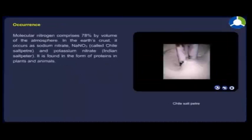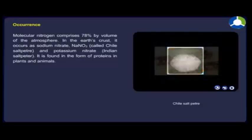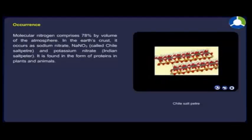Molecular nitrogen comprises 78% by volume of the atmosphere. In the earth's crust, it occurs as sodium nitrate NaNO₃ and potassium nitrate. It is found in the form of proteins in plants and animals.